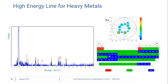Here's an example of a high energy line measurement spectrum. All the elements shown in blue are suitable with this line of excitation. Because we are higher in energy, we get better sensitivity for exciting the heavier metals on the periodic table.